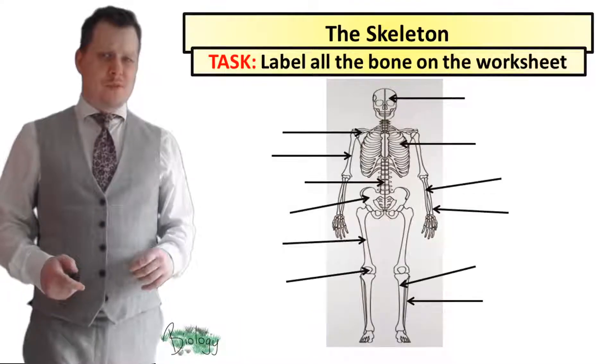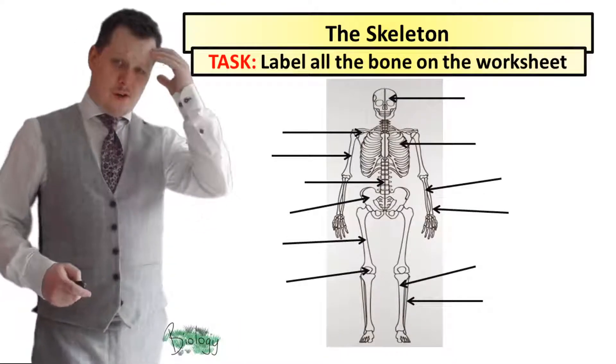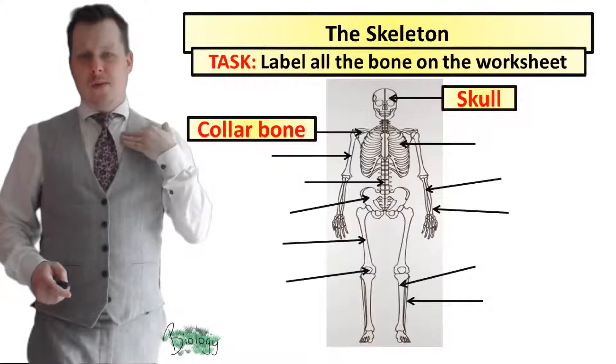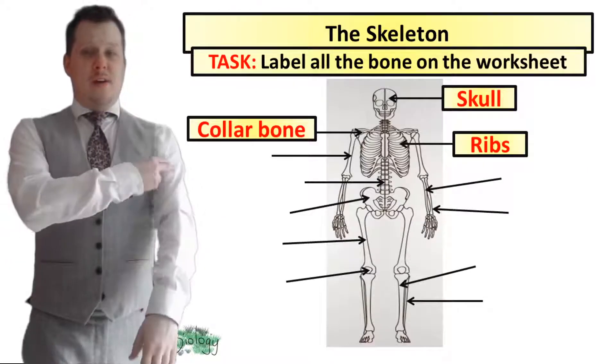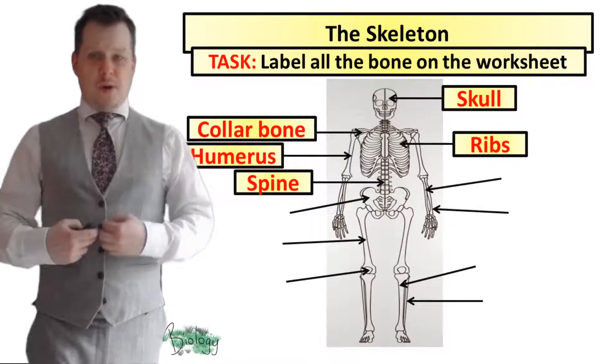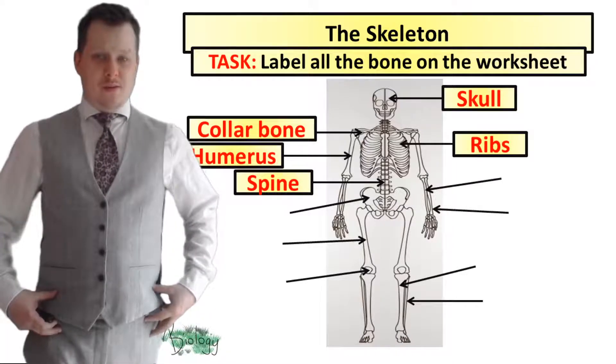Get your work finished. Starting from the top you've got your skull, a little bit further down you've got your collarbone and then you've got your ribs. At the very top of the arm you've got your humerus and you've got your spine running down the centre and then your pelvis.